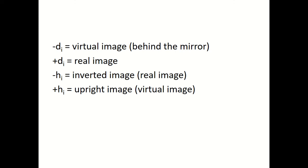A few important sign conventions: whenever you have a virtual image it's behind the mirror, giving a negative di. A real image is in front of the mirror, so a positive di means a real image. A negative hi means the image is inverted — all real images are inverted. A positive hi means it's a virtual image, because virtual images are behind the mirror and upright.